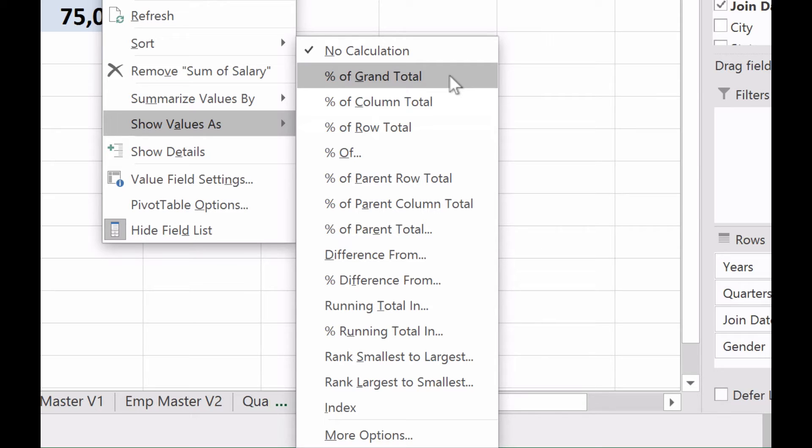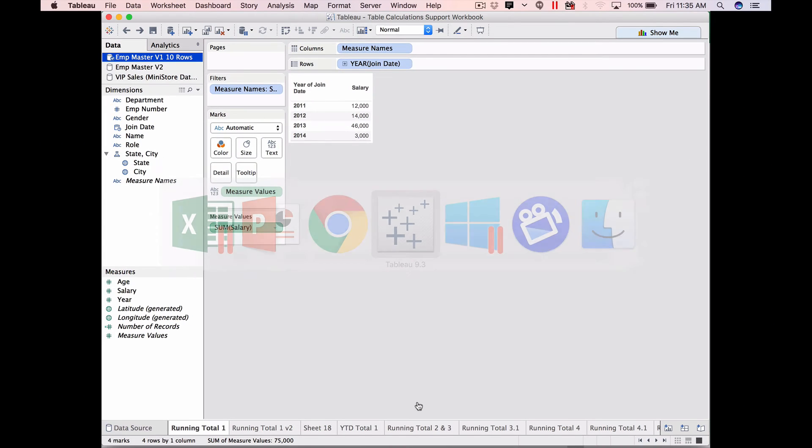What's interesting about this menu? So I looked at it that time: percentage of grand total, percentage of total calculations, difference from, percentage difference from, running total, rank. I remember seeing this list somewhere.